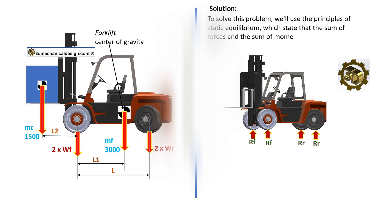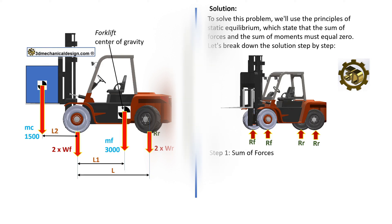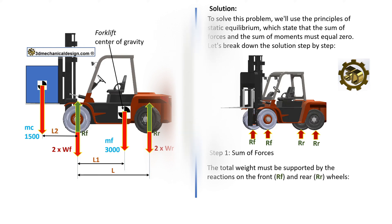Let's break down the solution step by step. Step 1: Sum of forces. The total weight must be supported by the reactions on the front and rear wheels. The equation is: 2·RF + 2·RR = MF + MC.